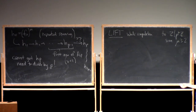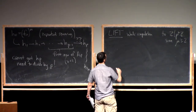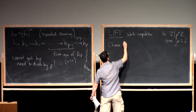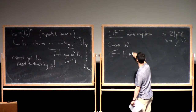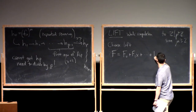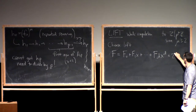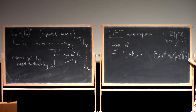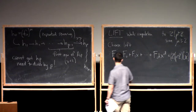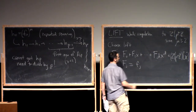We are going to lift to Z/p^μ·Z for some μ, at least 2, and one of our jobs is to figure out what μ we need — what is the smallest μ we can get away with — since larger μ means more expensive computation. So I'm going to choose a lift capital F = F_0 + F_1·x + ... + F_d·x^d in (Z/p^μ·Z)[x], a polynomial over the integers mod p^μ.